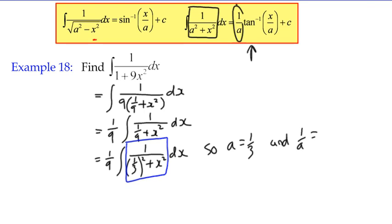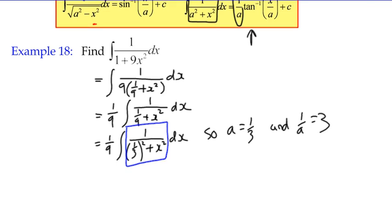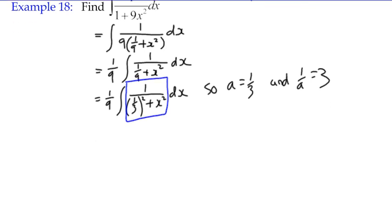So you can remind yourself that 1/a is going to be 3/1, or 3. So when we write down our answer, we're at the point of saying it's going to be 1/9 of, well, it's the inverse tan. In fact, it's (1/a) times the inverse tan of (x/a) + c.